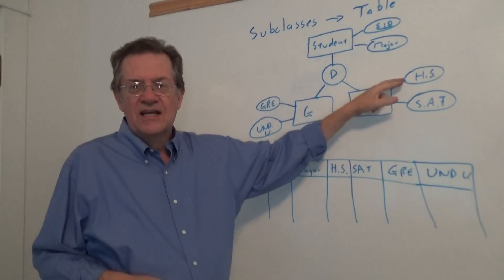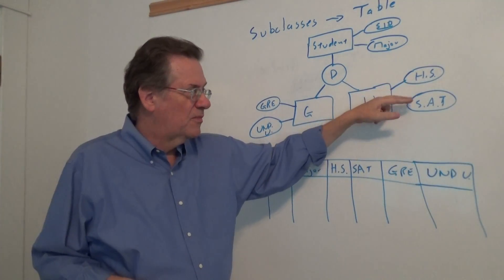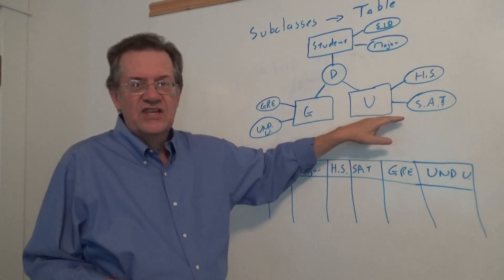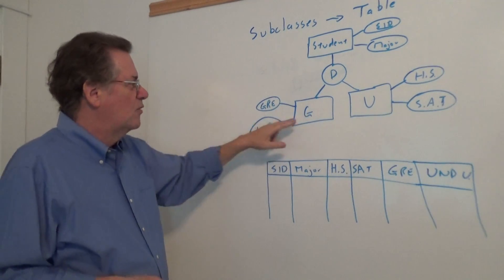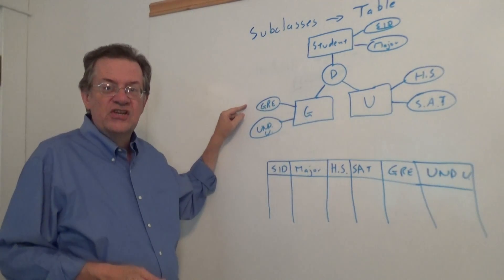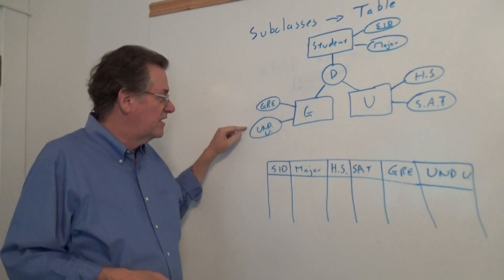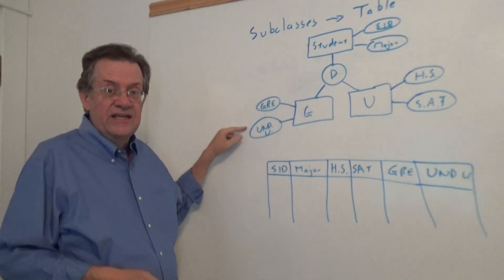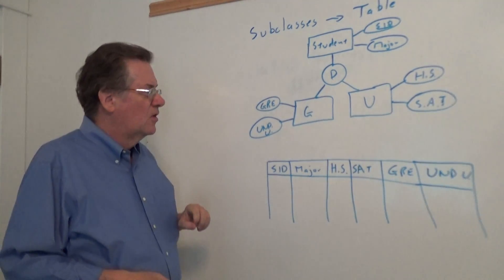If they're undergraduate, they'd have something like a high school diploma where they got the degree, SAT score. If they were a graduate, they'd have something like the GRE along with the name of the undergraduate institution where they got their degree.